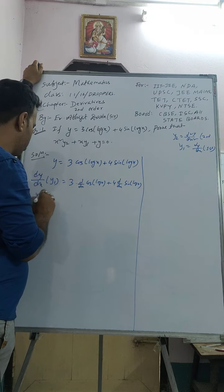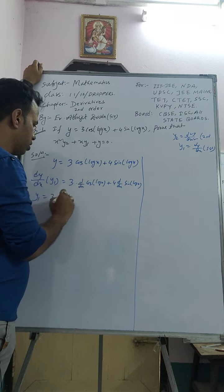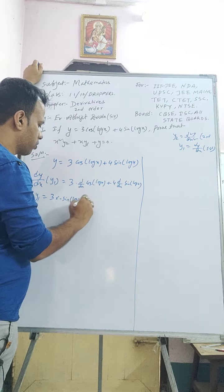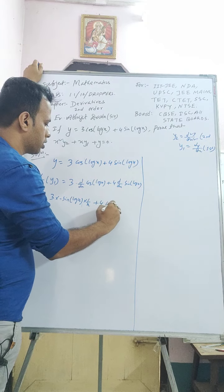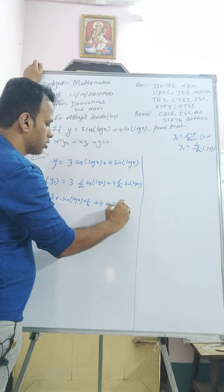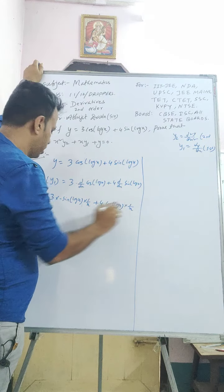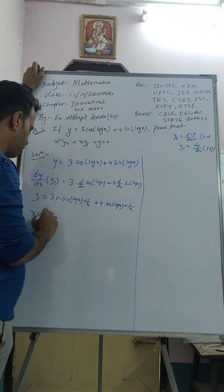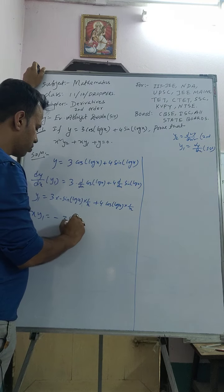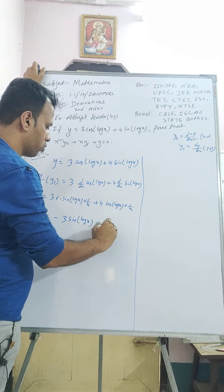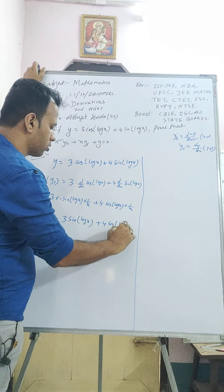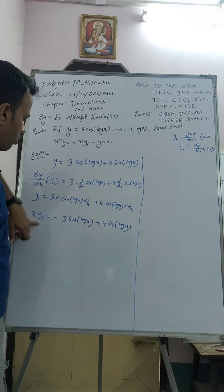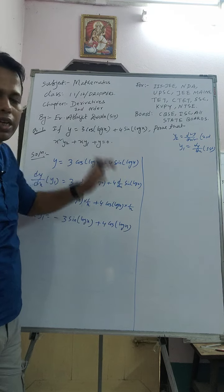So y₁ = 3·(−sin(log x))·(1/x) + 4·(cos(log x))·(1/x), since d/dx of log x is 1/x. Now multiplying both sides by x, we get xy₁ = −3sin(log x) + 4cos(log x), because x cancels with the 1/x on each term.